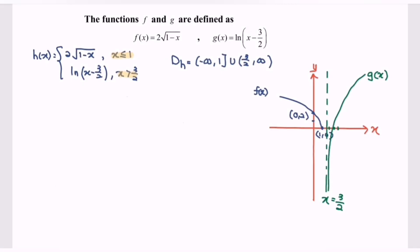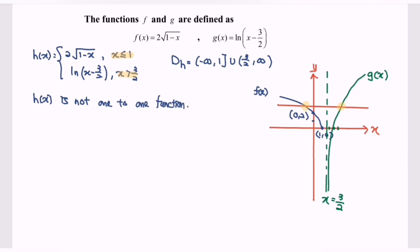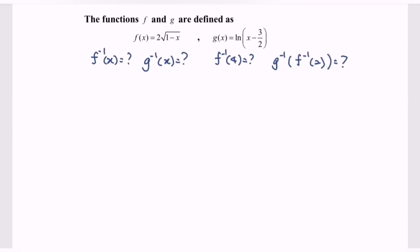For Part B, show that h(x) is not one-to-one. By using the horizontal line test, locate a horizontal line on the graph, and we can see that there are two intersection points. Therefore h(x) is not a one-to-one function, as shown in the diagram. The following parts ask us to find f inverse, g inverse, and then g inverse composed with f inverse for the value 2.